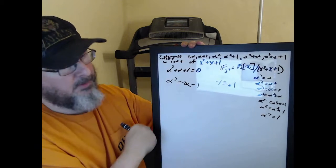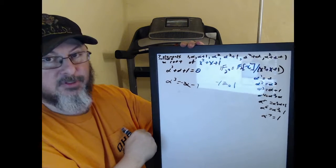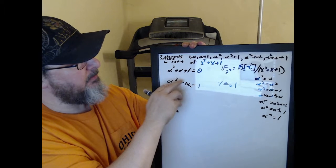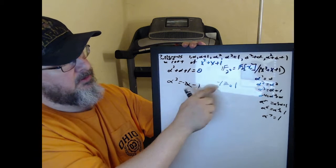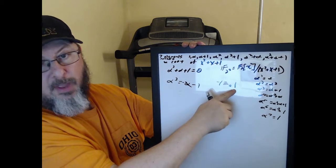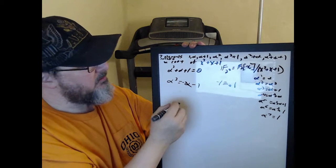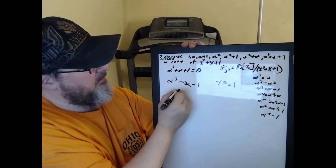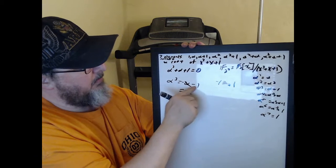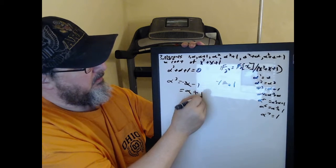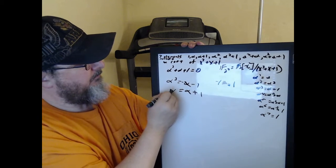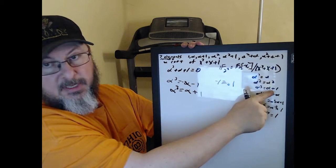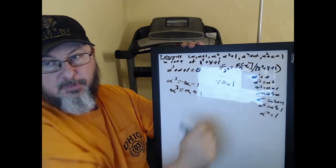Subtract alpha, subtract 1. This is mod 2, so negative 1 is congruent to 1 mod 2. So negative 1 is just 1, and minus 1 is plus 1. So alpha to the third is alpha plus 1. That's where he got alpha plus 1 from.